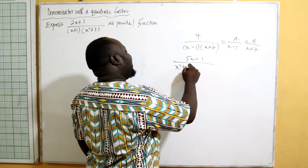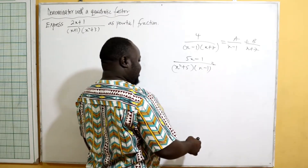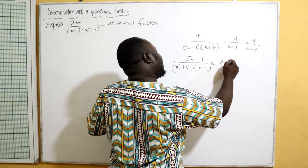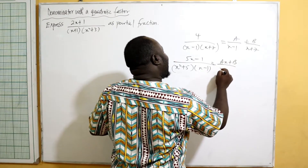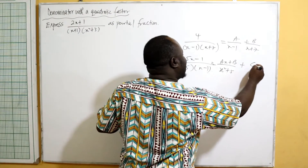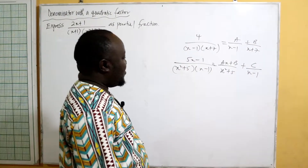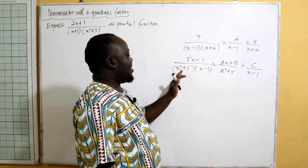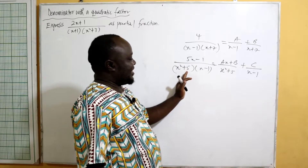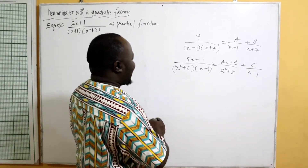You can write this as ax plus b over x squared plus five, then plus c over x minus one. For the quadratic factor x squared plus five, we use ax plus b, and for the linear factor x minus one, we use c over x minus one.